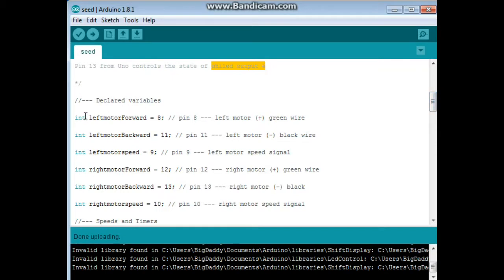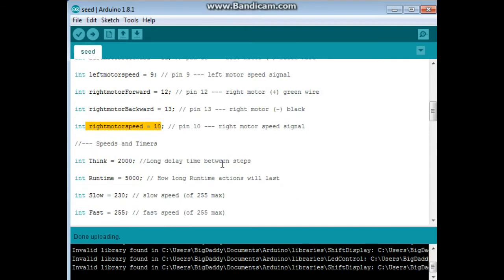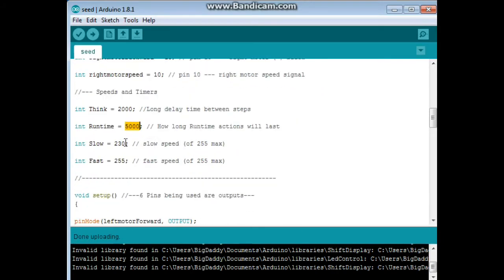Now, we have our variables. Left motor forward. See, it's telling it pin 8. Left motor backward. Pin 11. See how that works. Right motor forward. Right motor backward. Left motor speed is on pin 9. Right motor speed is on pin 10. Then we have a delay timer. And we have a run timer. So, it will do these things for 5 seconds at a time. And then we have some speeds. Our slow speed. Our fast speed.